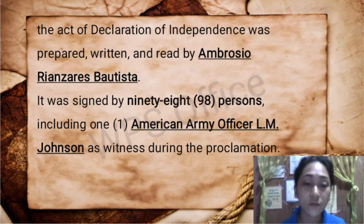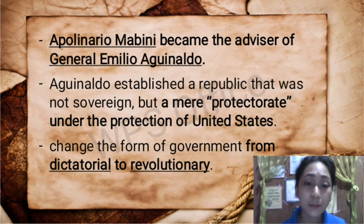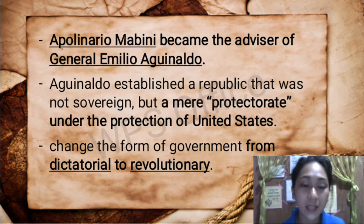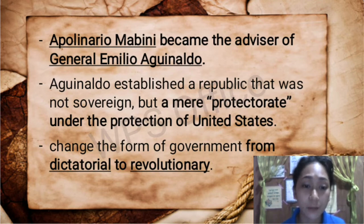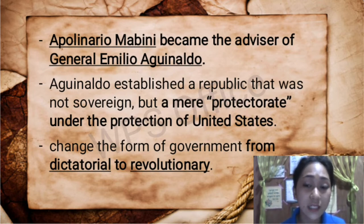For Filipinos, the event of June 12, 1898 was the signal of independence against the Spanish forces that had stayed in the Philippines for around 300 years. Apollinario Mabini became the advisor of General Emilio Aguinaldo. Aguinaldo established a republic that was not sovereign, but a mere protectorate under the protection of the United States. Mabini, however, advised Aguinaldo to change the form of government from dictatorial to revolutionary. The U.S. opposed the declaration because they had plans of colonizing the Philippines, which led to a guerrilla war against the Americans.